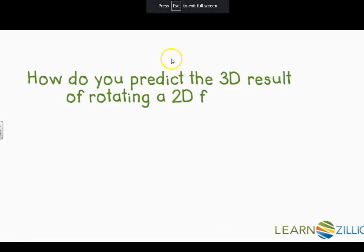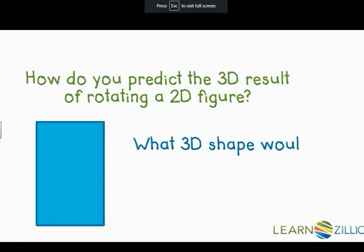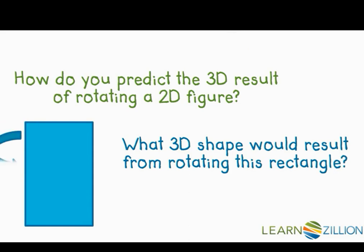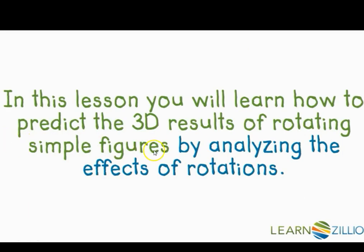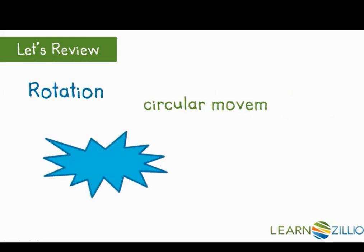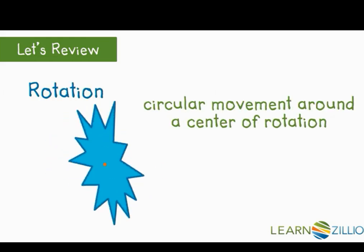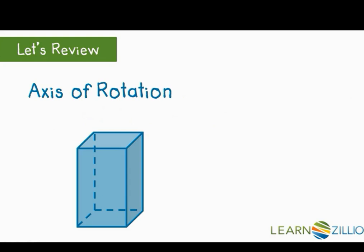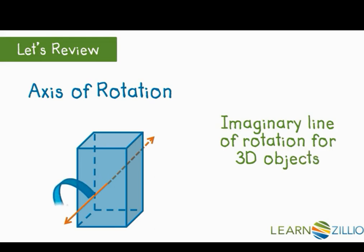How do you predict the three-dimensional results of rotating a two-dimensional figure? In this lesson you'll learn how to predict those results by analyzing the effects of rotations. First, a rotation is a circular movement of an object around a center of rotation. Second, in three-dimensional space, objects rotate around an imaginary line called an axis of rotation. We're going to rotate two-dimensional figures around an axis and examine what three-dimensional figures result.